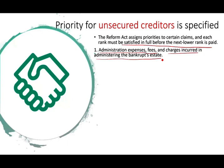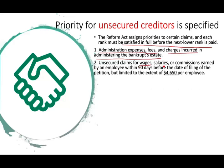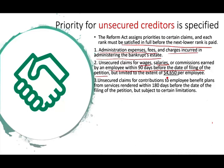Next are unsecured claims for wages, salaries, and commissions earned by employees within 90 days before the date of filing the petition, but not more than $4,650 per employee. Then come unsecured claims for contributions to employee benefit plans from services rendered within 180 days before the filing date. Simply put, if you owe funding to a 401(k) for those employees for the past 180 days, you must do that funding after paying wages.